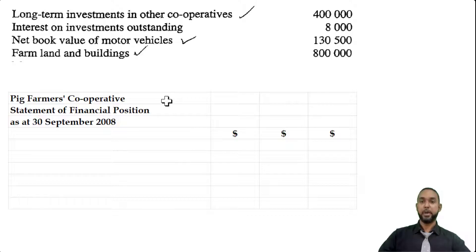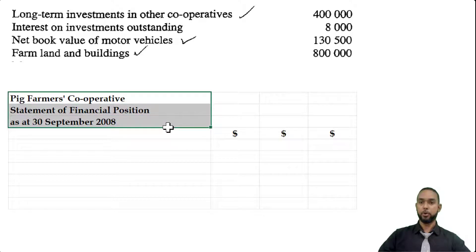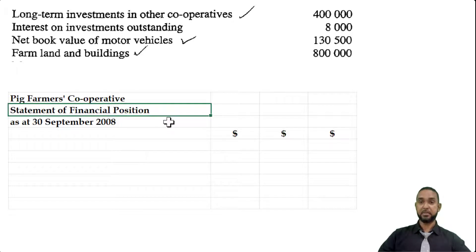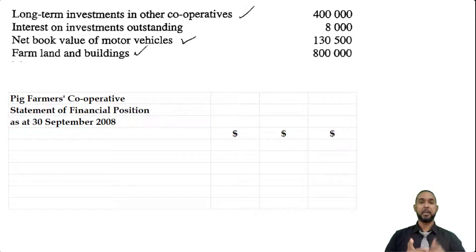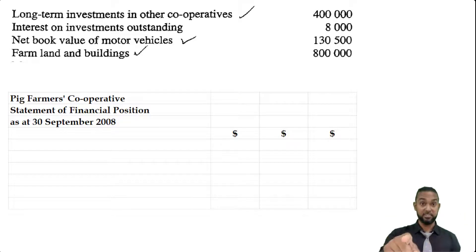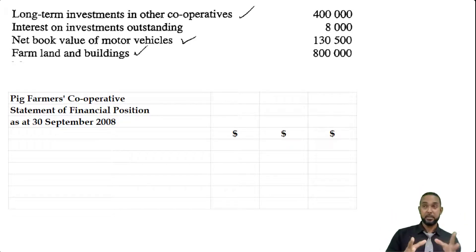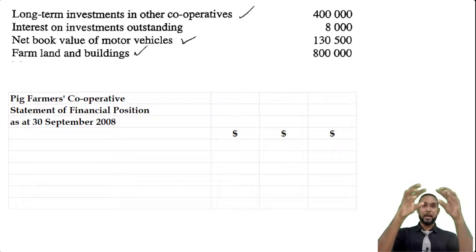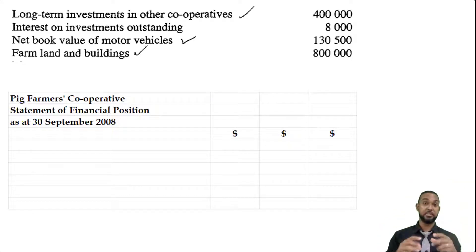Of course, don't forget to head up your statement properly: name of the entity, name of the statement, and the period to which it applies. Now, I'm going to do this balance sheet two ways. I like to do net assets — which is assets minus liabilities — on top, in order of permanence, and then capital below. But other people also like to do assets only on top, and then capital plus liabilities below. So I'm going to show you both ways.